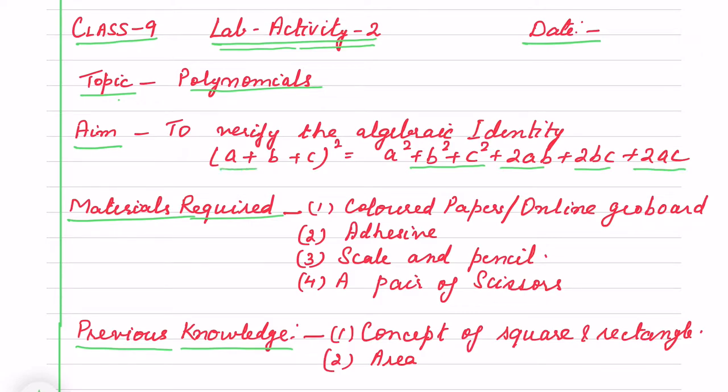How we will do by activity method? So what we write first? We write topic. This is from polynomial chapter. What is our objective or aim? We have to verify the algebraic identity.